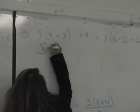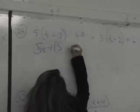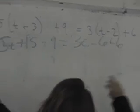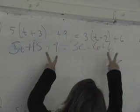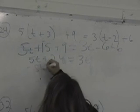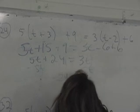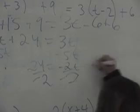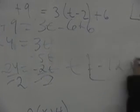Before you do anything else, you got 5t plus 15 plus 9 equals 3t minus 6 plus 6. So we see that we have like terms. We have regulars and regulars. So let's rewrite it. 5t plus 24 equals 3t plus nothing. So minus 5t minus 5t, 24 equals negative 2t, divided by negative 2 and you get t equals negative 12. Everybody write that. Thank you, Melanie.